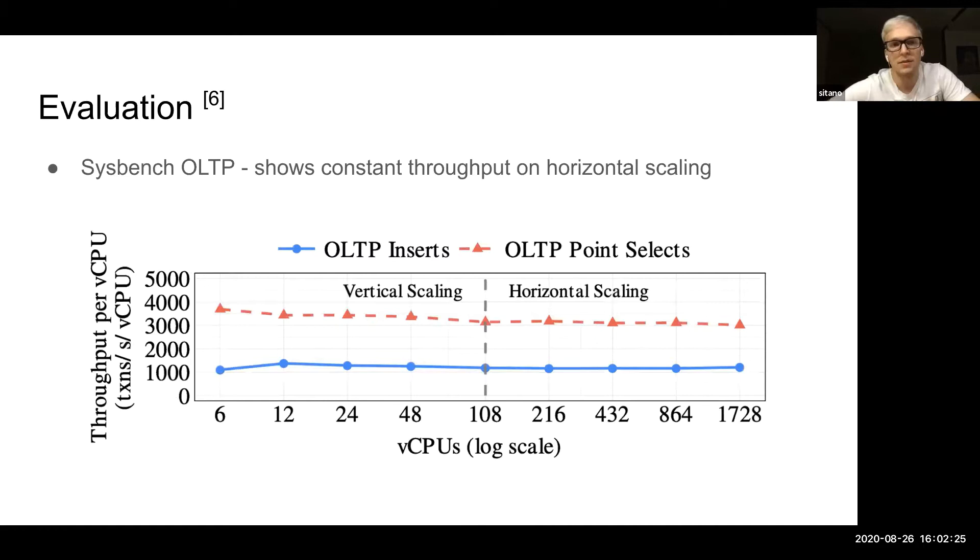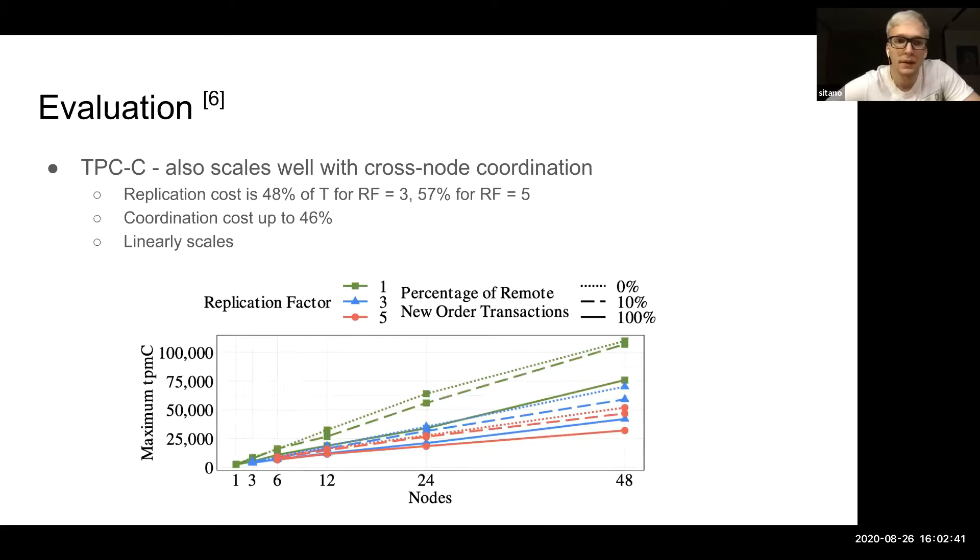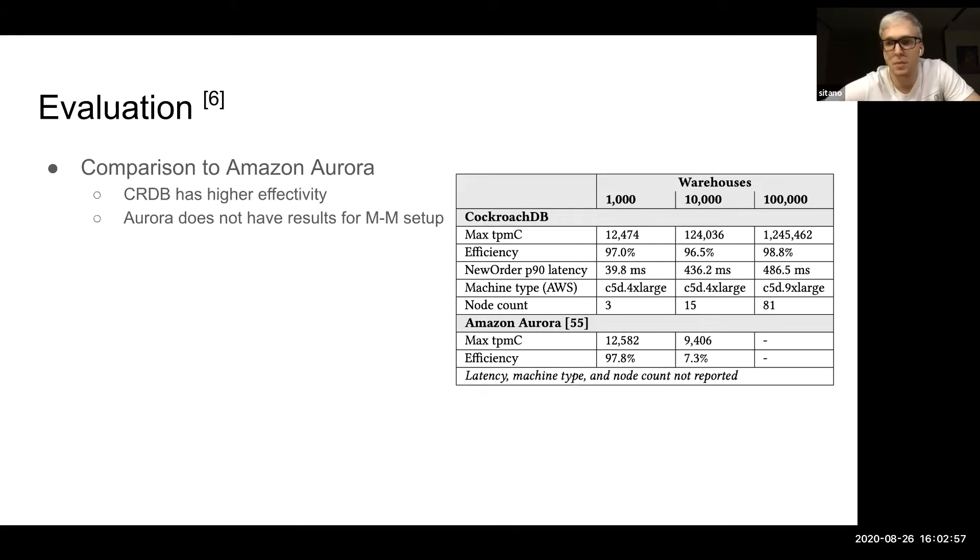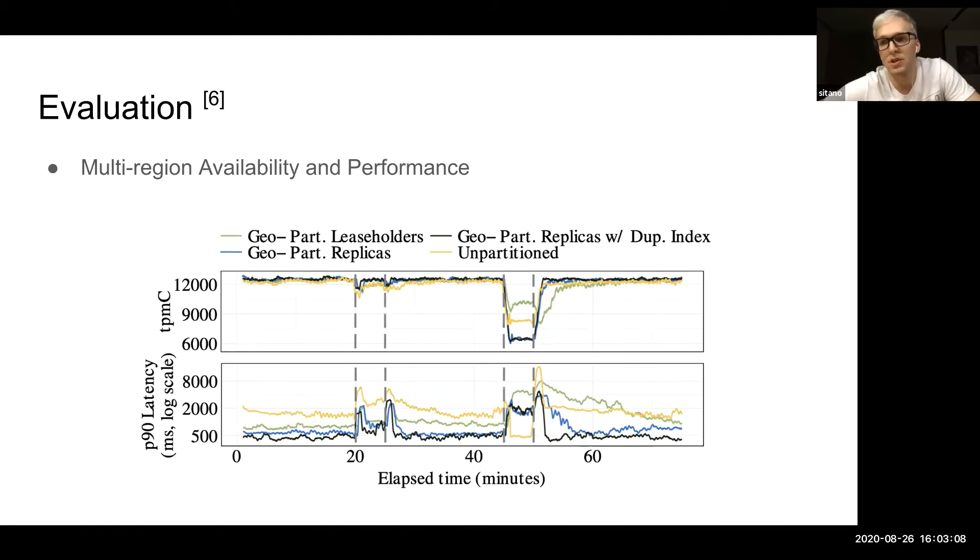For the evaluation, they did the evaluation with the Sysbench OLTP benchmark, and it showed that CockroachDB scales horizontally and linearly with the growth of the cluster size. They also showed and evaluated the cross-node coordination overhead with the TPC-C benchmark, and they also showed that it scales linearly. They also compared themselves to Amazon Aurora and showed that they are much more efficient. They also showed that they actually provide multi-region availability.